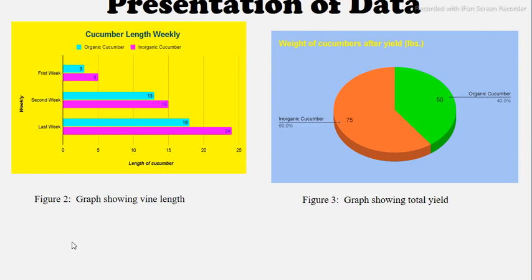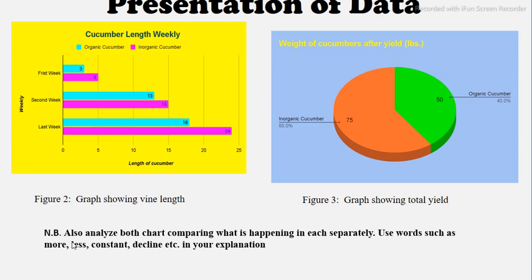Here we have the bar graph and we have pie charts — one showing the vine length and one showing the total yield. Also analyze both charts, comparing what is happening in each separately. For example, the graph showing green vine length: for week one, the cucumbers grown with organic fertilizer were two centimeters less in height than those grown with inorganic. So you analyze each chart differently.